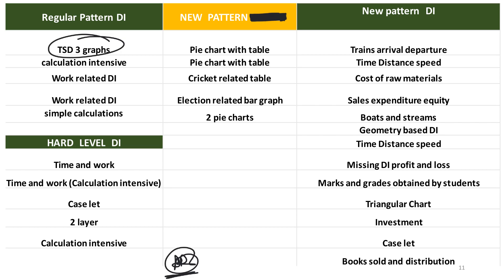If you look at arithmetic DI, they make it like one layer, two layer, three layers — something like that. Then you have something called case-let. Case-lets are sometimes doable as far as CET is concerned, but most of the time they are time-consuming. They are doable — no doubt — you can do it, you can score, but at the end of the day you need to see how much time you have. Case-lets are a little lengthy and time-consuming. You have to read and extract data, so it takes a good amount of time.